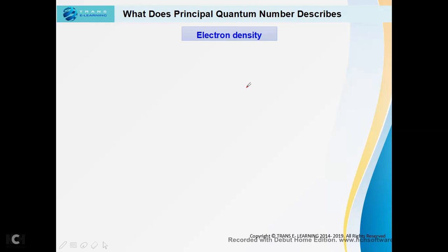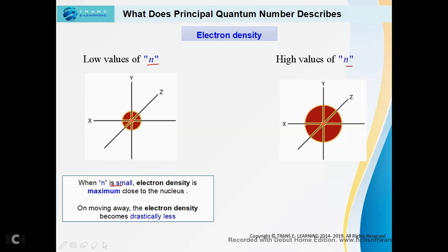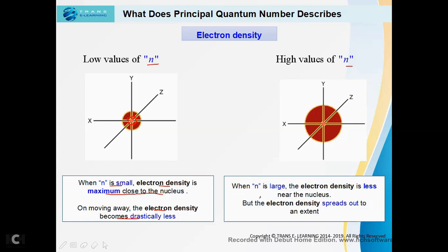Principal quantum number also describes the electron density. For a lower value of n, the energy level is closer to the nucleus and the electron density is maximum close to the nucleus — the probability of finding an electron is maximum. On moving away from the nucleus, the electron density becomes drastically less. For a large value of n, the electron density is less near the nucleus but spreads out to a greater extent. As n increases, the cloud spreads but the electron density becomes less.